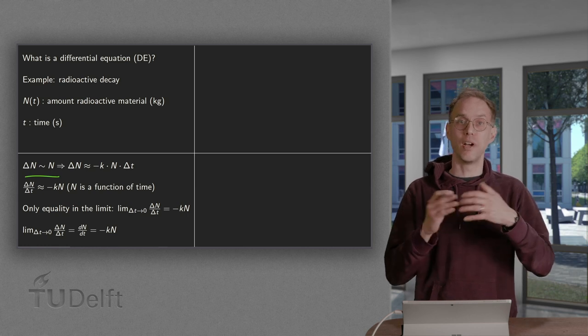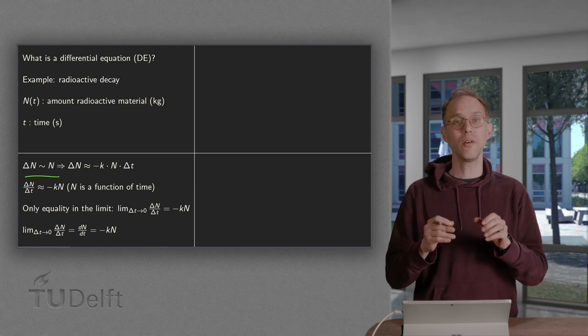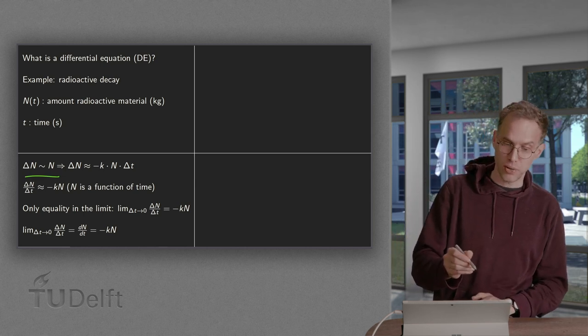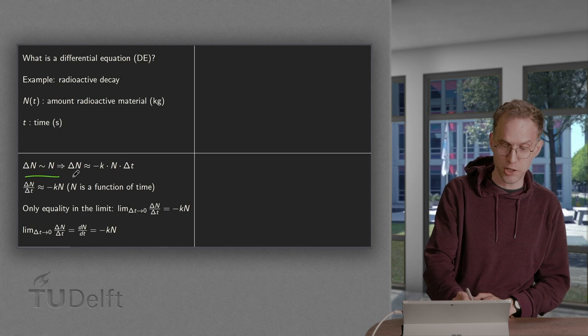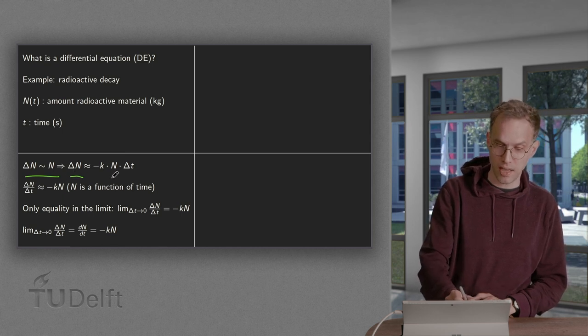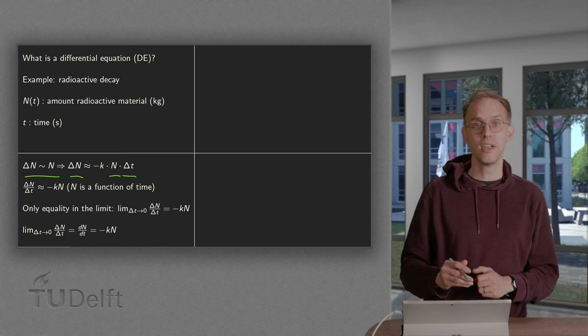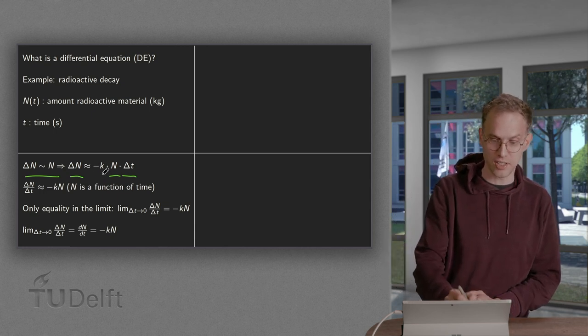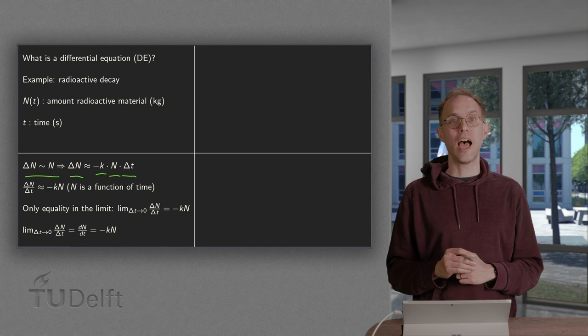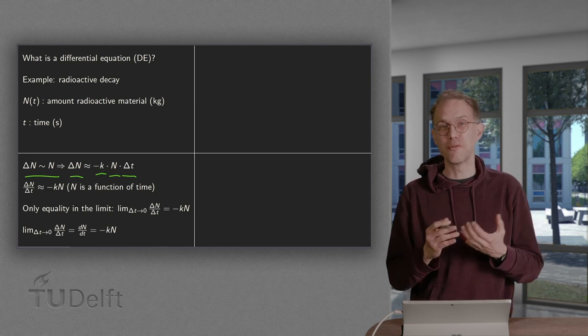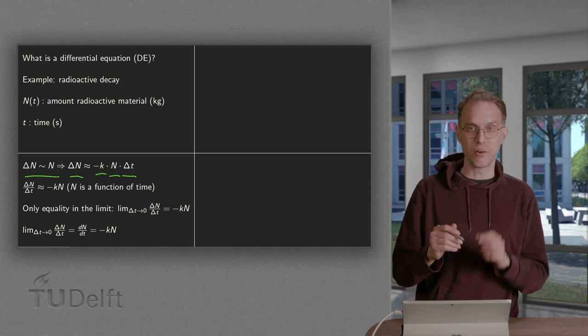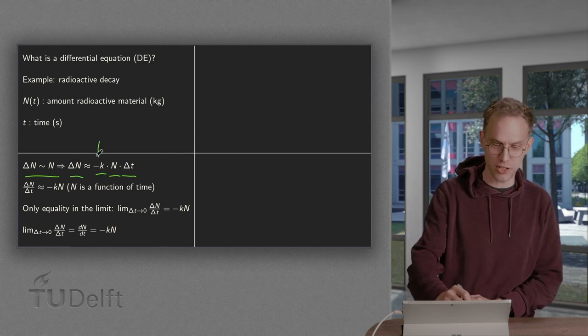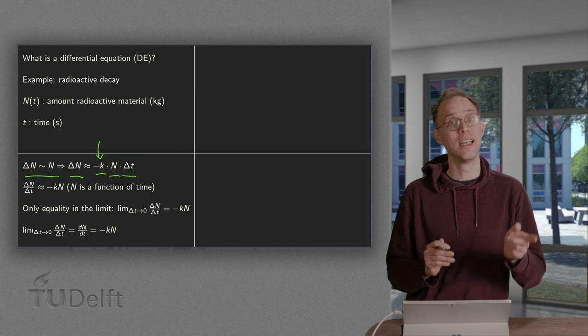And if you wait longer, if you wait twice as long, the amount which is decaying becomes twice as large. So your delta N is approximately equal to N times delta T. And it's proportional, so there's a proportionality constant K in between. And we are decaying. We like to have positive constants. So K, N, and delta T are all positive, which means that we require an additional minus sign to get decay.